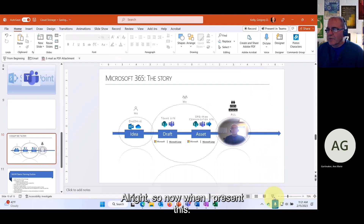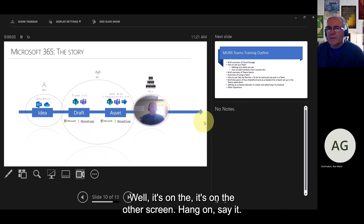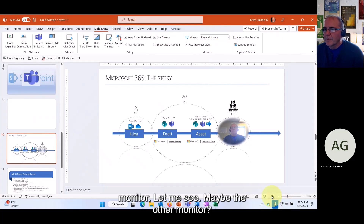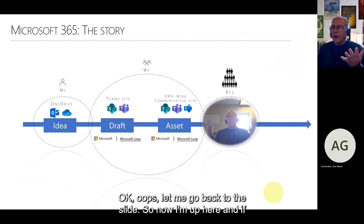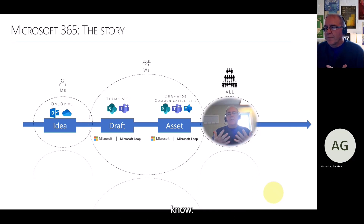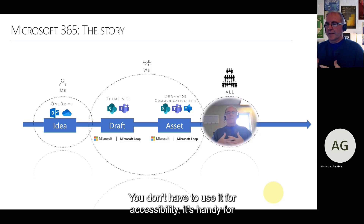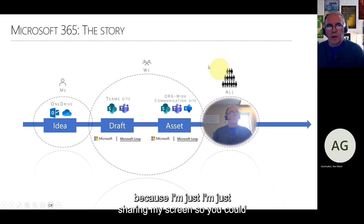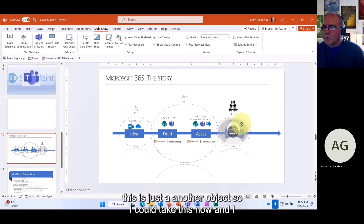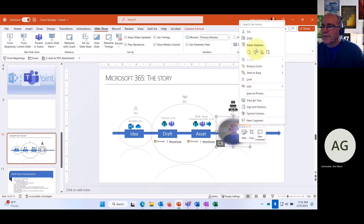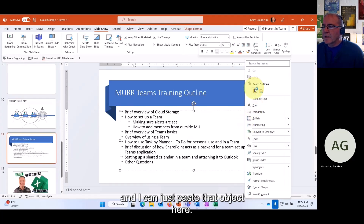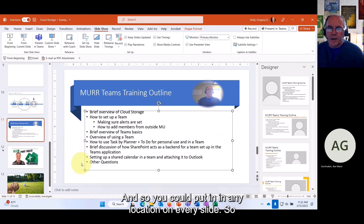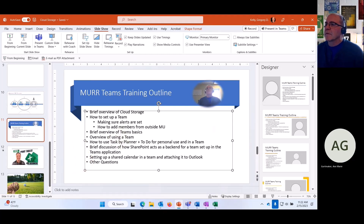The cameo is just another object, so I can make it the same shape as an oval on the slide. When I present, the live camera feed appears on the slide. This works in Zoom too since you're just sharing your screen. Because it's an object, I can copy it and paste it onto any other slide and move it to any location — so you can have it on every slide.